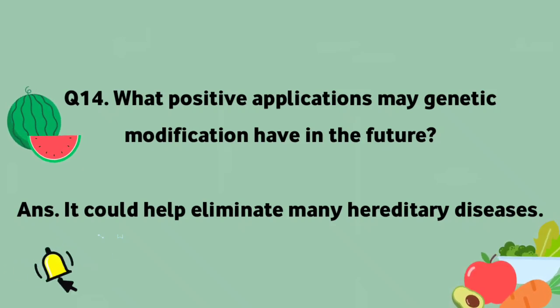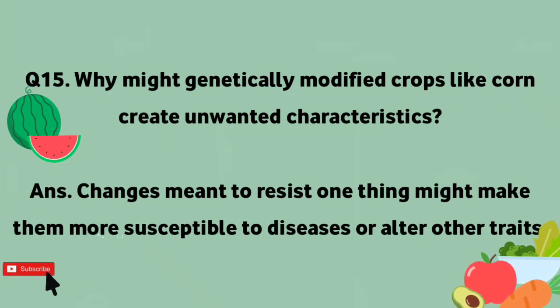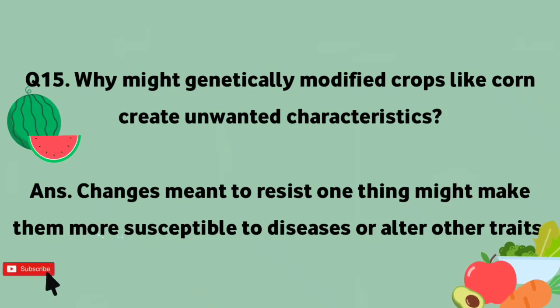Why might genetically modified crops like corn create unwanted characteristics? Changes meant to resist one thing might make them more susceptible to diseases or alter other traits.